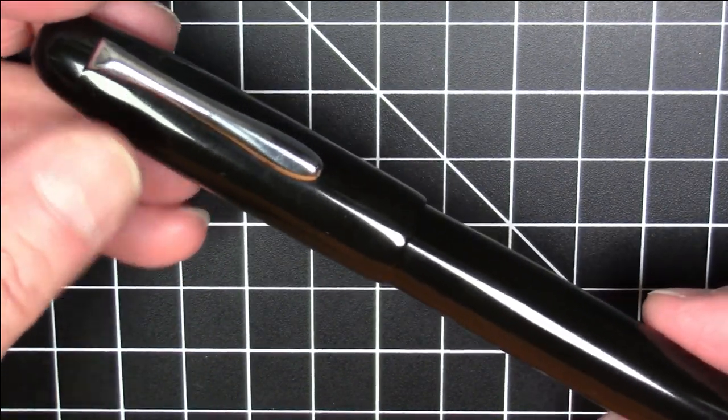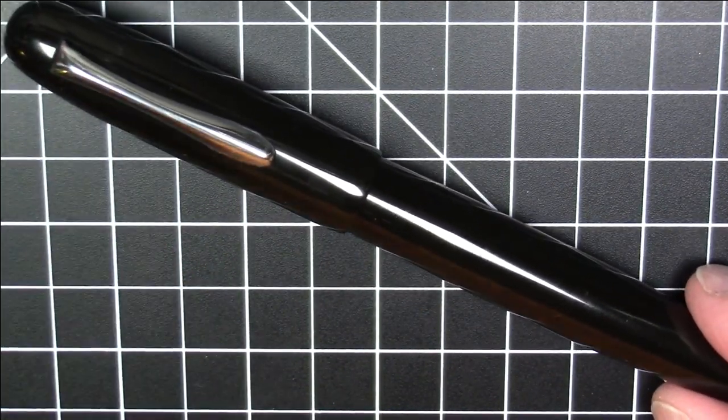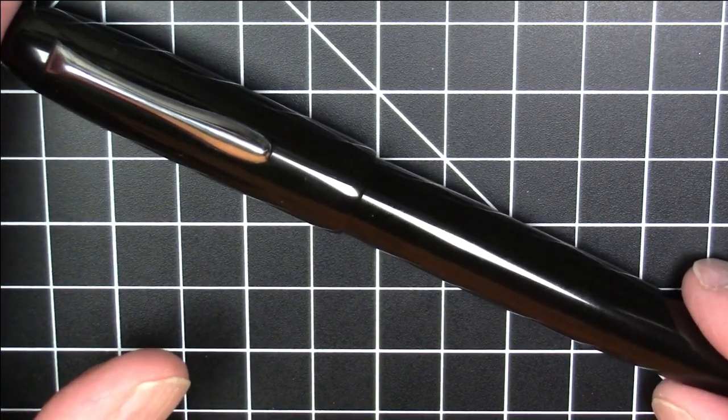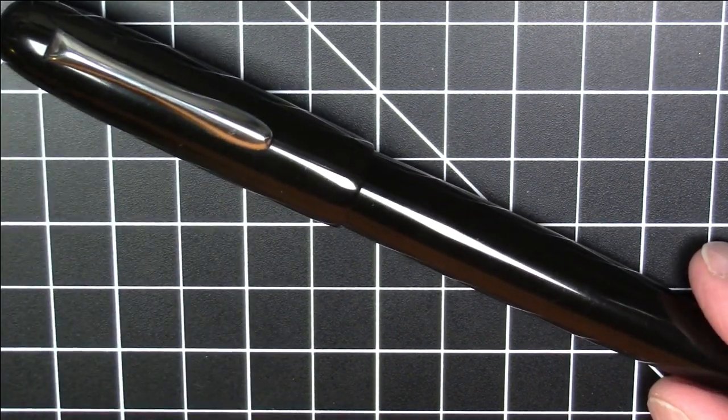It's got a little bit of weight to it. It weighs 32 grams. It's all ebonite. So given that ebonite is not a particularly heavy material, the weight shouldn't be surprising.